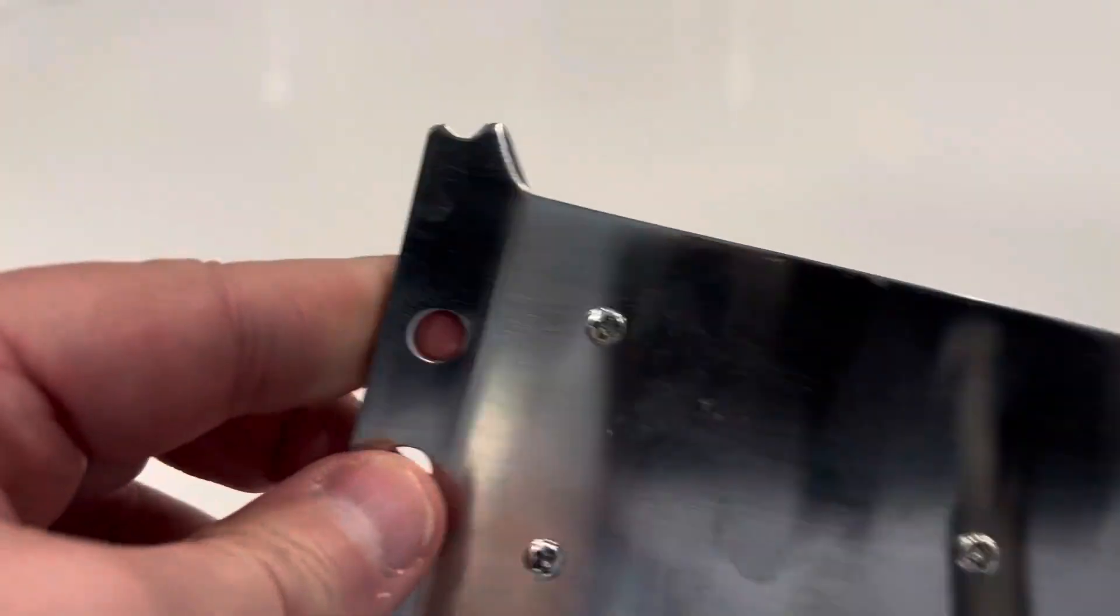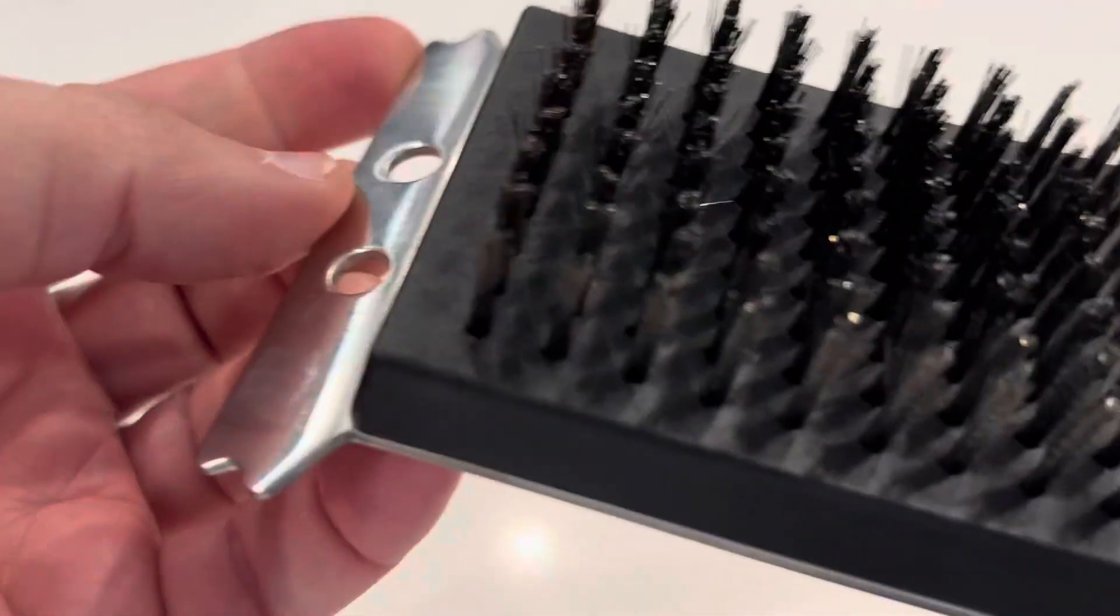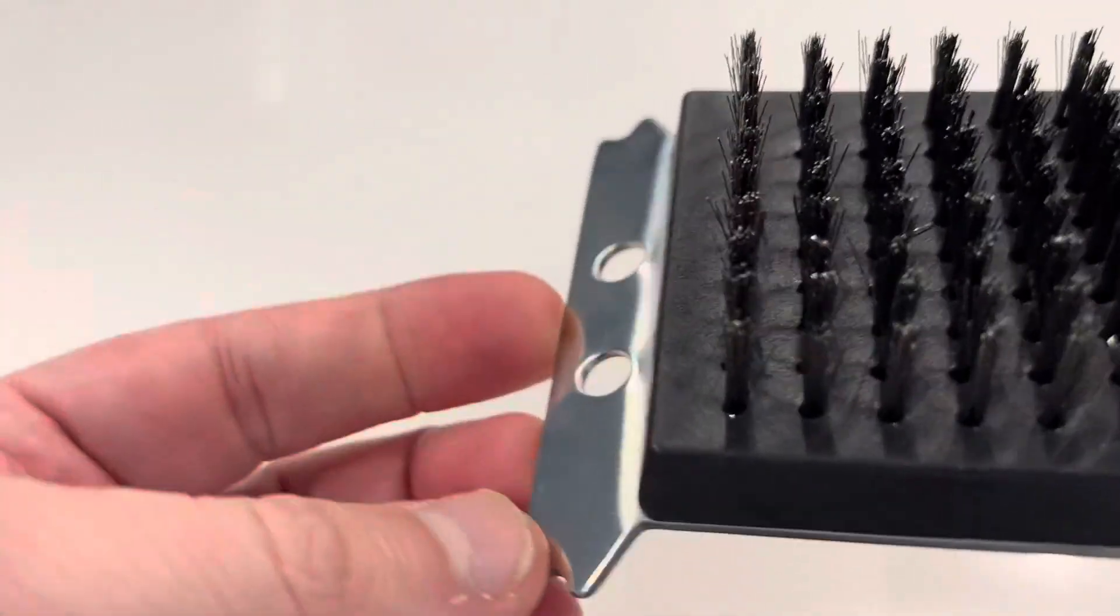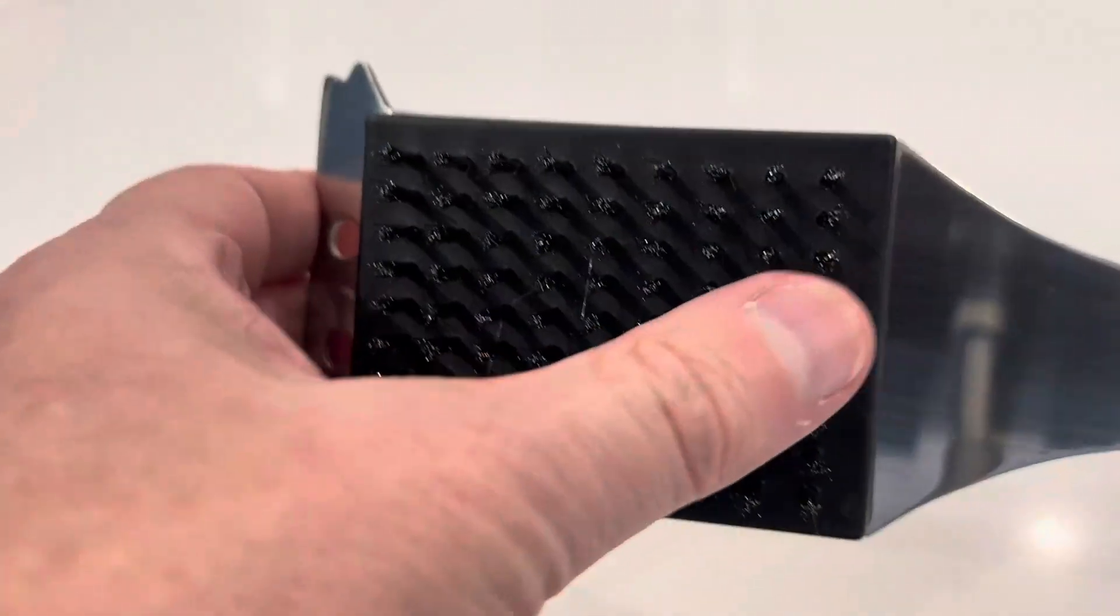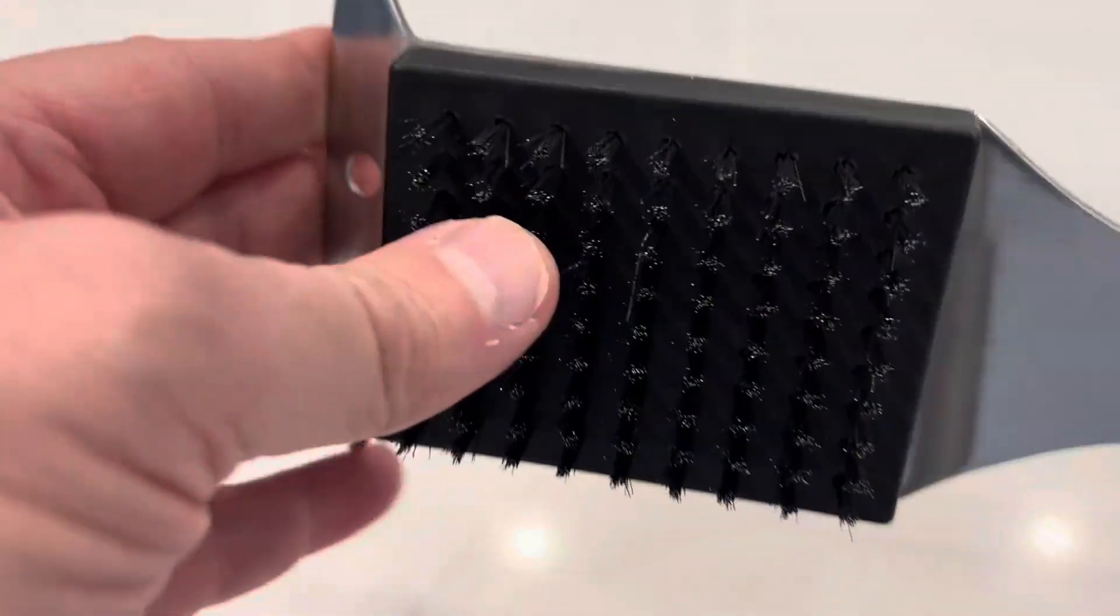It is stainless steel, and what I mainly use this for is a scraper. So you've got the scraper right here. You just scrape, get all the gunk off, and then you have the bristles here on the brush.